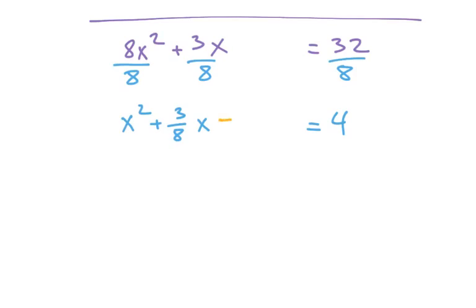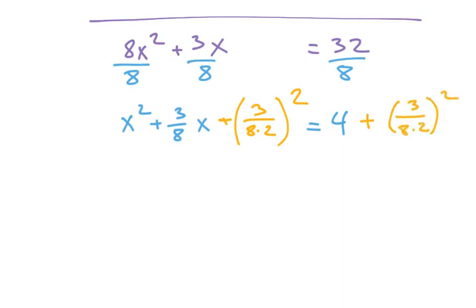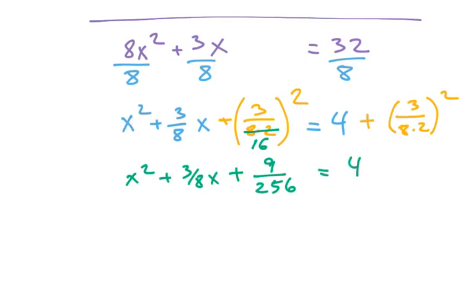So then we have to complete the square — we divide by two and square. When you divide by two, it just means you have a two on the bottom and then square. What you do to one side, you've got to do to the other. This becomes x squared plus three-eighths x plus — this is going to become three over 16, and then we're going to square it — which is nine over 256, equals four plus nine over 256. Since both of these are the same thing, I don't have to recalculate it.